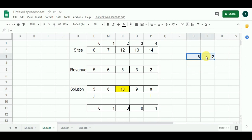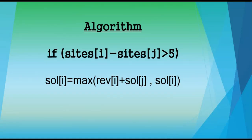As you can see, these sites are not within a 5-mile distance of each other. Now let's check the algorithm. If sites[i] minus sites[j] is greater than 5, then solution[i] equals max of revenue[i] plus solution[j], or solution[i]. This concludes the algorithm.